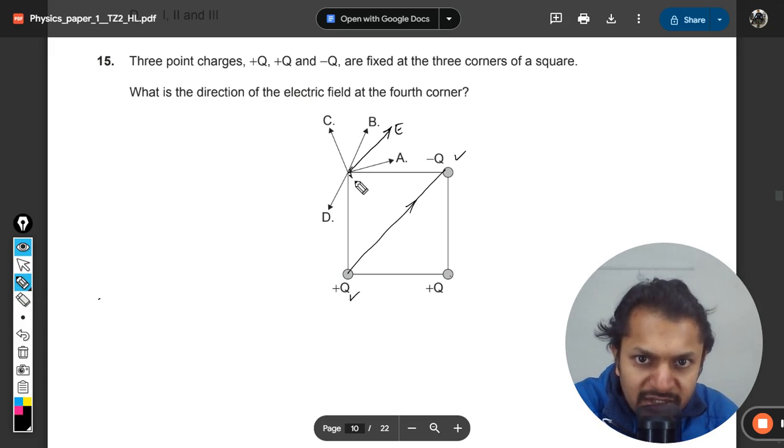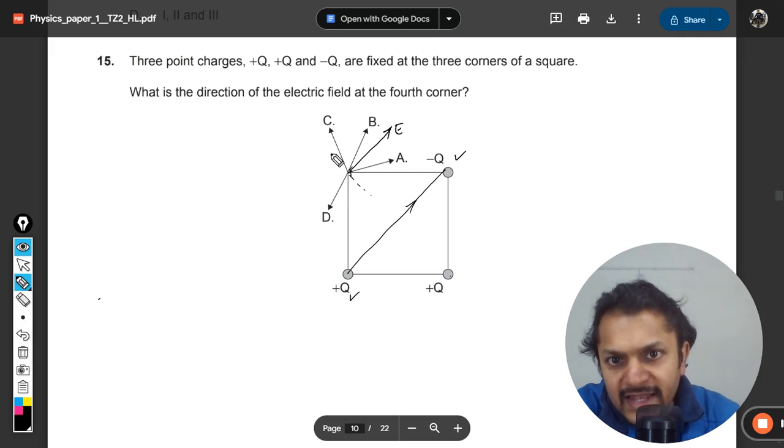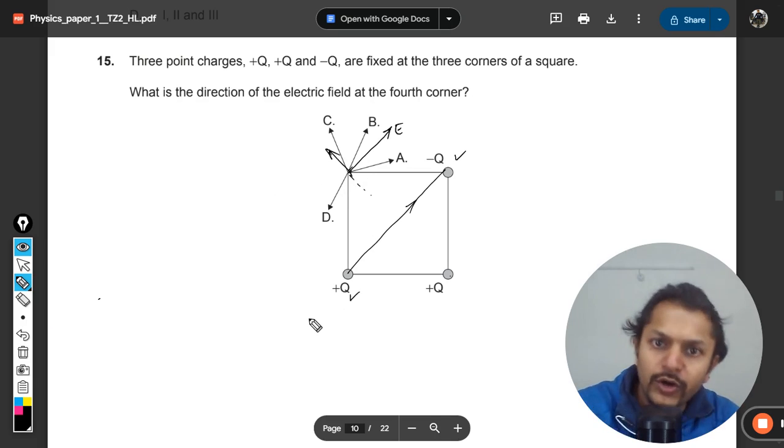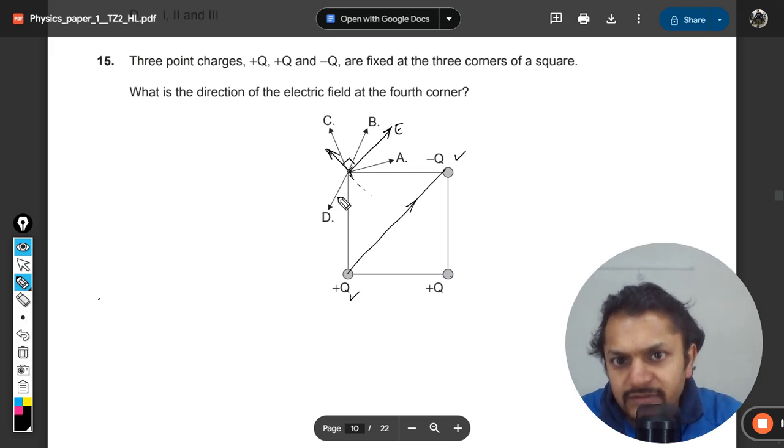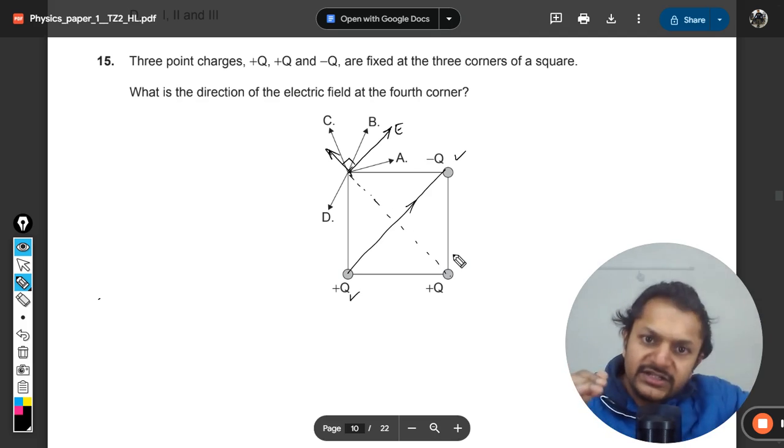So this positive charge now will be creating an electric field which will be lesser in magnitude, but 90 degrees to this. Because this is the diagonal, it will be along this diagonal at 90 degree angle but lesser.